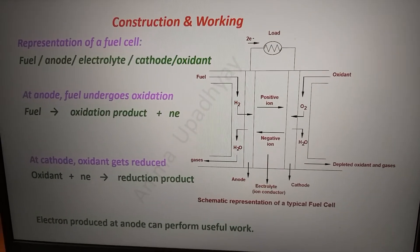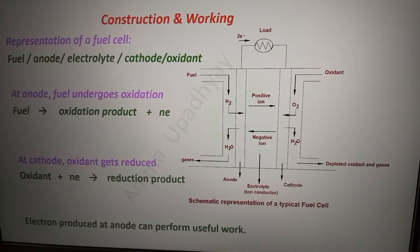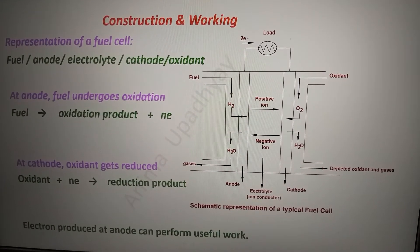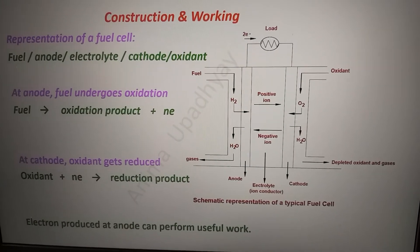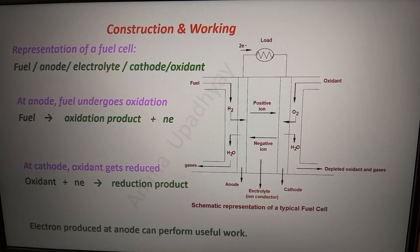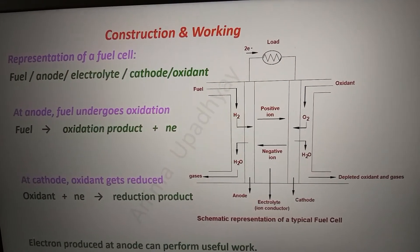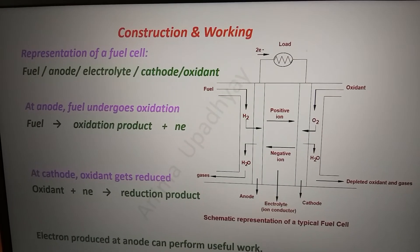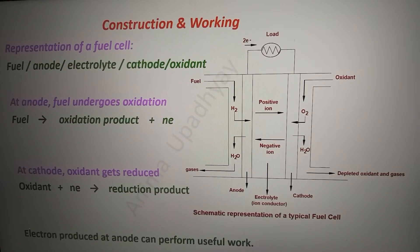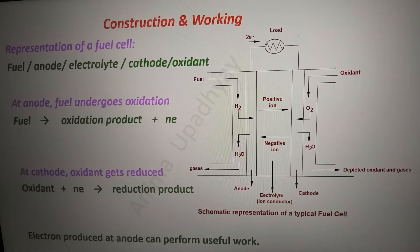Here is the construction and working of a typical fuel cell. You can see in the figure that the fuel is supplied at the anode and the oxidant — air — is supplied at the cathode. The two electrodes are separated by an electrolyte, so the fuel cell is represented as: fuel at the anode, oxidant at the cathode, and electrolyte in between. The anode undergoes oxidation with loss of electrons, and the cathode undergoes reduction of the oxidant by accepting the electrons released at the anode, producing an electric current.